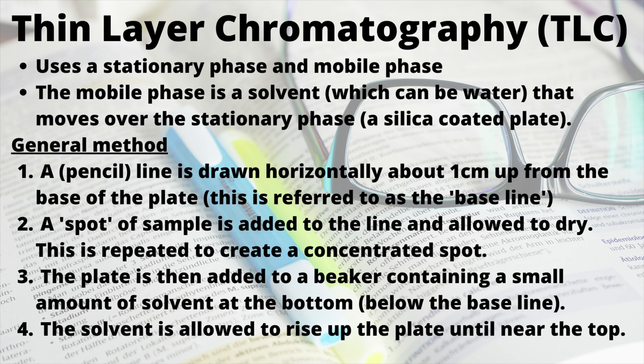The general procedure for using a TLC plate is very simple. We draw a pencil line about one centimeter up from the base of the plate — we call this the baseline. You must use a pencil because ink could be soluble in the solvent and start to travel with the spots, which are the components of the mixture. We then create an initial concentrated spot of our sample on the baseline using a capillary tube, letting it dry and repeating this process each time.